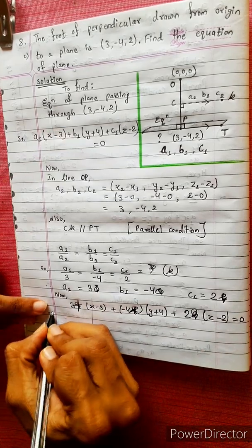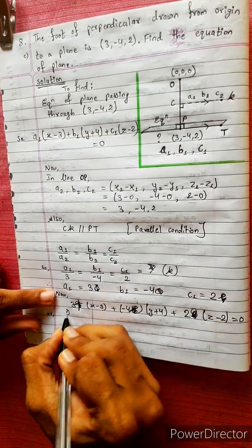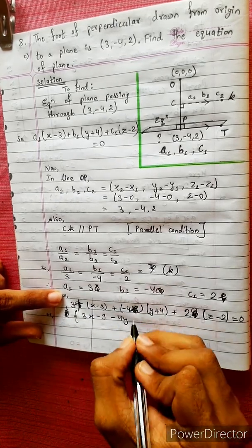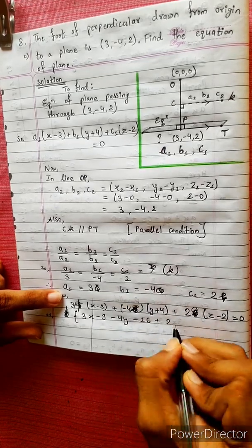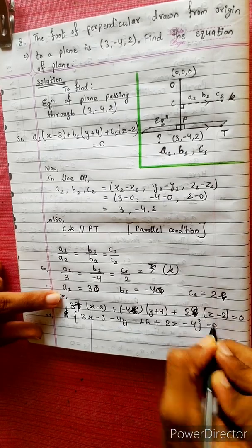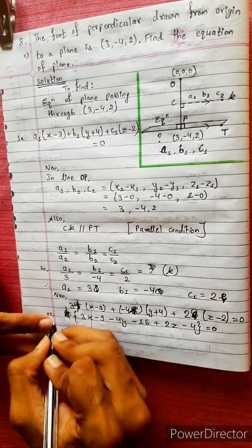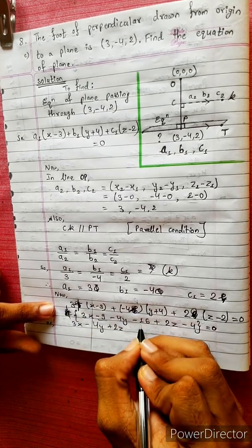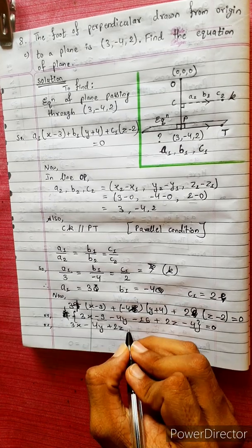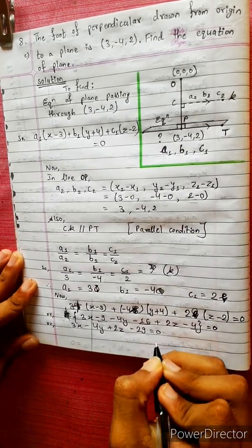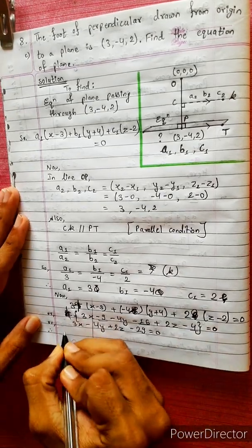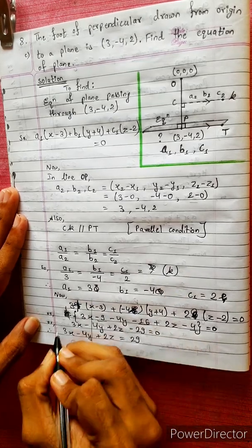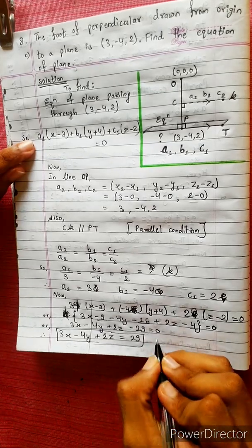We simplify this equation. Therefore, 3x minus 4y plus 2z equals to 29. We have the equation of the plane here: therefore, the equation of the plane is 3x minus 4y plus 2z equals 29.